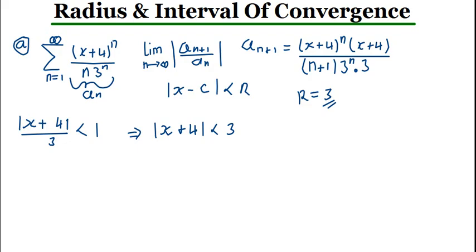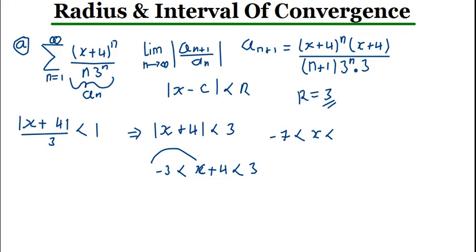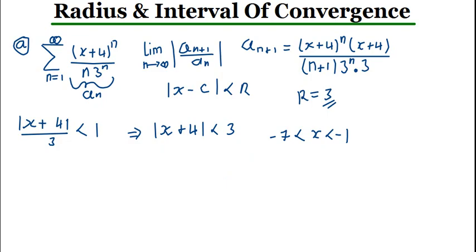Now let's find the interval of convergence. We remove the absolute value signs, giving negative 3 less than X plus 4 less than 3. Subtracting 4 from all sides, we get negative 7 less than X less than negative 1. But we need to confirm whether this is the final answer by testing the endpoints.